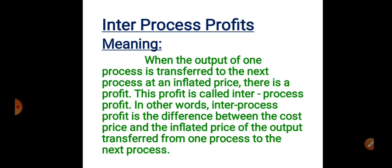Inter process profit is the difference between the cost price and the inflated or invoice price of the output transferred from one process to the next process. In other words, it is the profit element added at the time of transfer — the inflated price being cost plus profit.